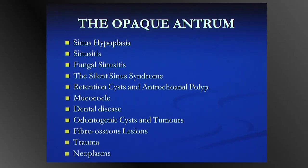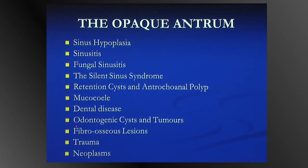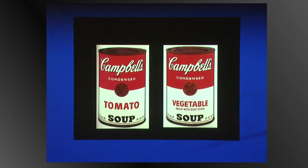When you look at it, it looks daunting at first, but it's not too bad. You have a congenital entity and then acquired entities, of which a large group are inflammatory, a small group of dental entities, bony lesions, trauma for completeness, and tumours. When you look at it that way, it's not that daunting — even more so than the petrous apex.